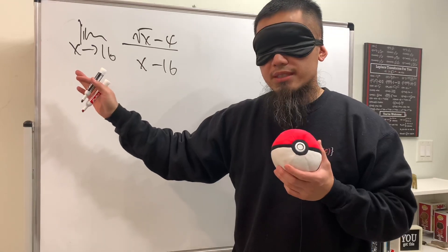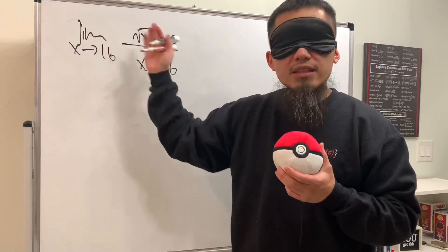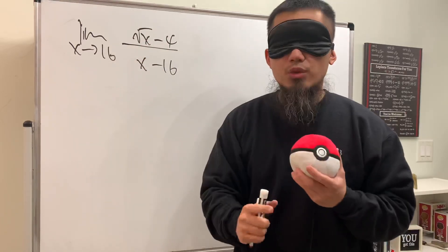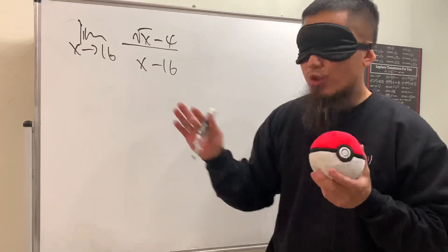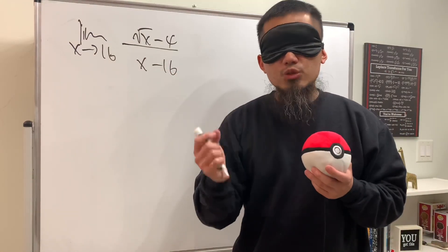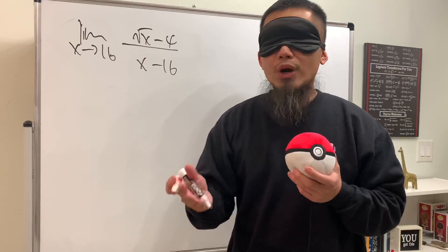Well you see, if you put 16 to this x and that x on the top we get zero, on the bottom we also get zero. But that doesn't mean that we don't have any answer for this. When we are calculating limits, if we get zero over zero that just means that we will have to do more work.